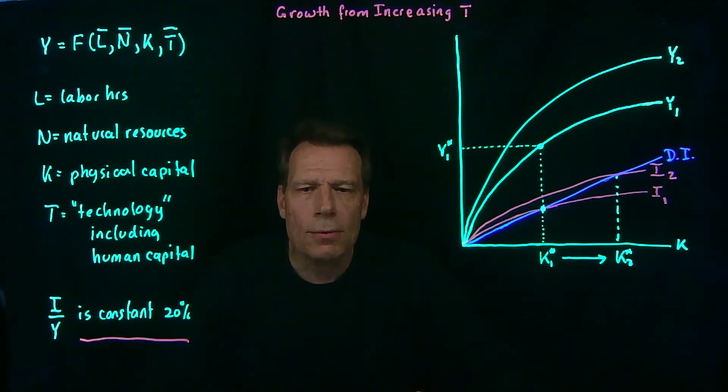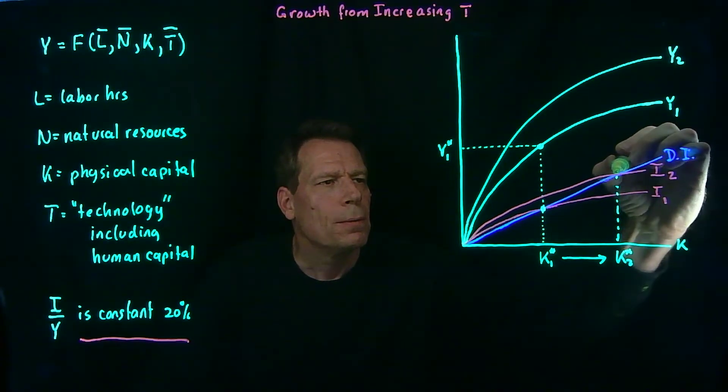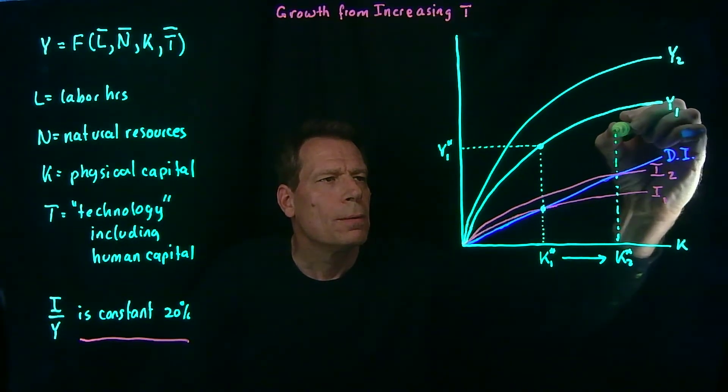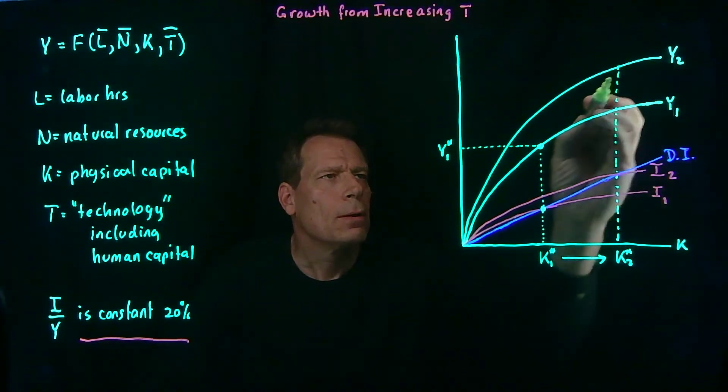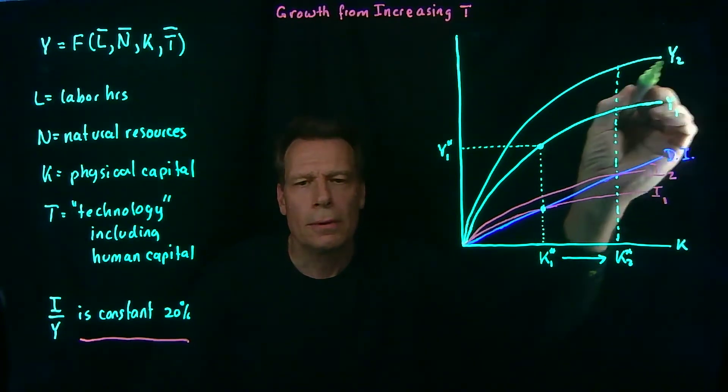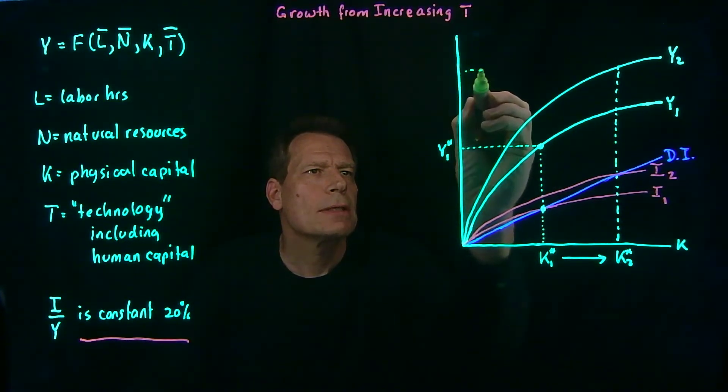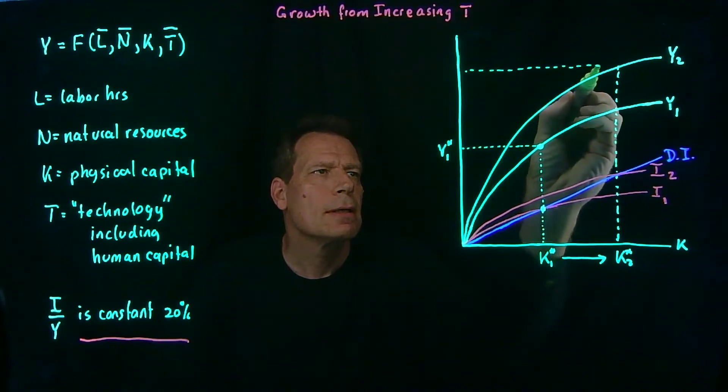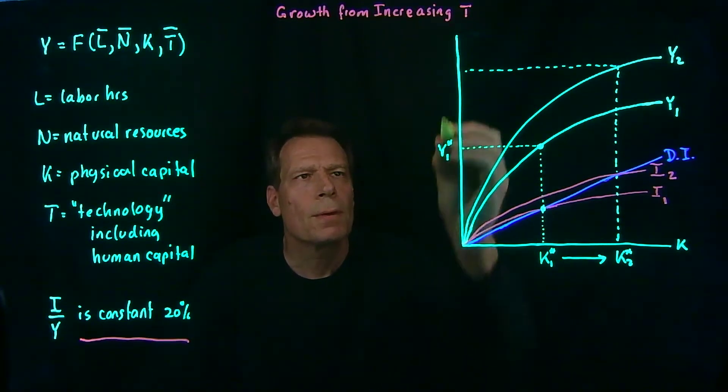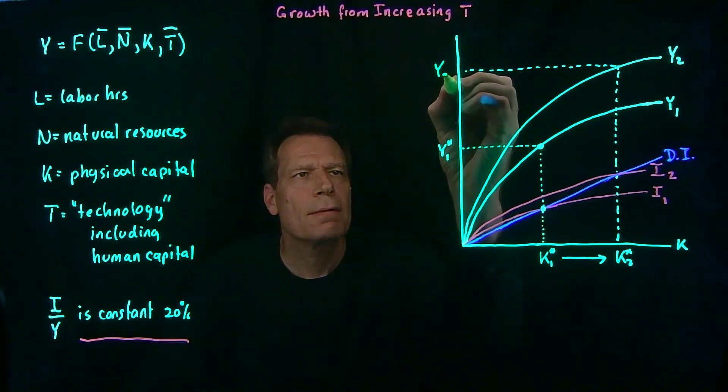So at that new level of capital, we're going to read off what GDP will be when we get to the new GDP curve that's relevant for the new level of technology. So we're going to see an even bigger increase in GDP. We'll end up at this level of GDP.